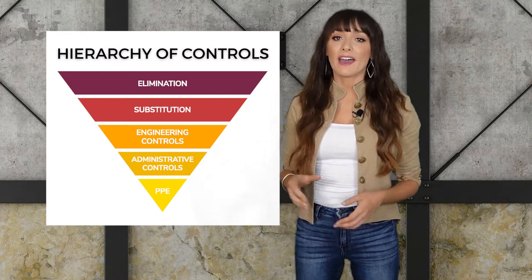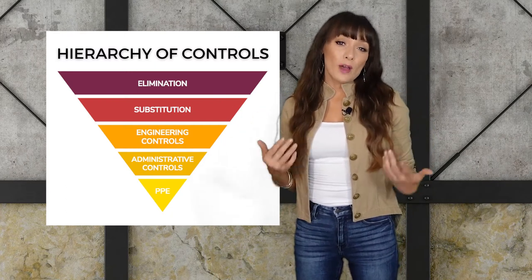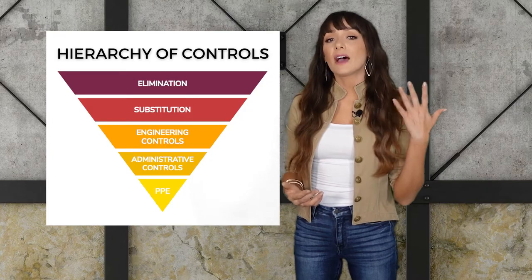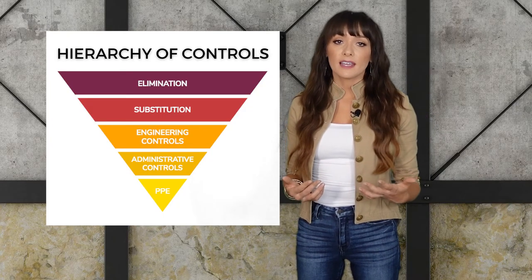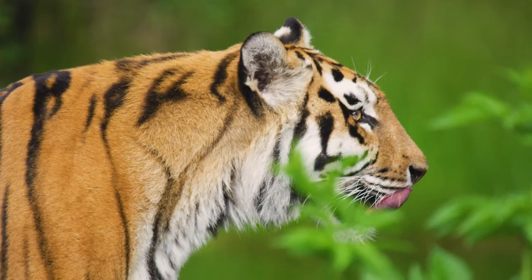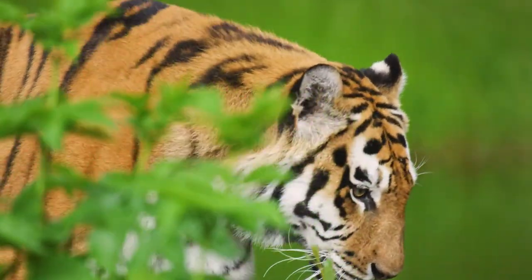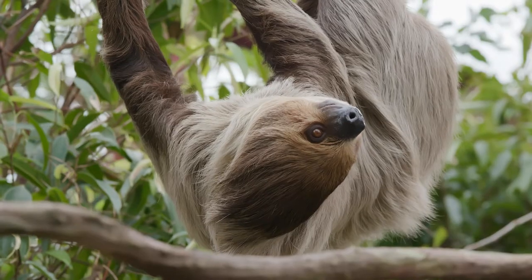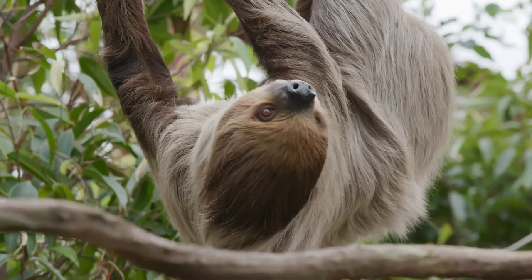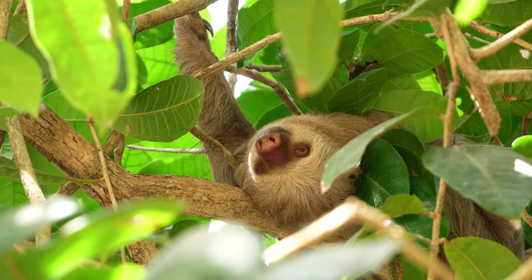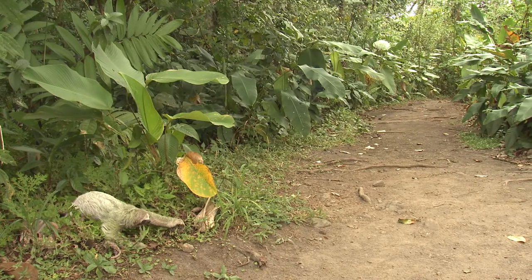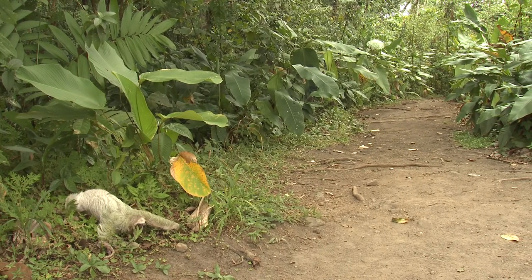Next up, we have substitution. Let's say you don't want to get rid of the tiger, because that means you'll have one less attraction for guests. So you think about it and decide that unfortunately the tiger is just too ferocious for your operation. In this case, you may decide to substitute the tiger for a sloth. Sloths are just as popular these days, and they're basically vegans of the animal kingdom, and they only reach a max speed of 0.17 miles per hour, even when threatened. Sounds pretty low risk.